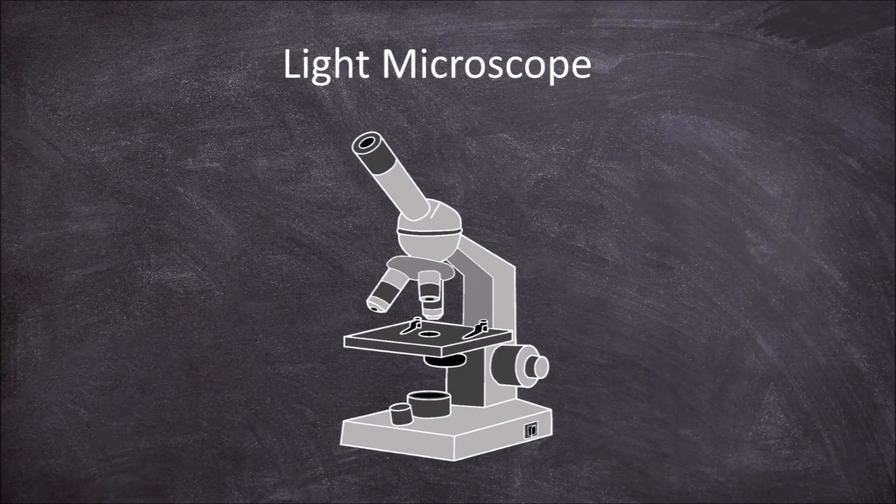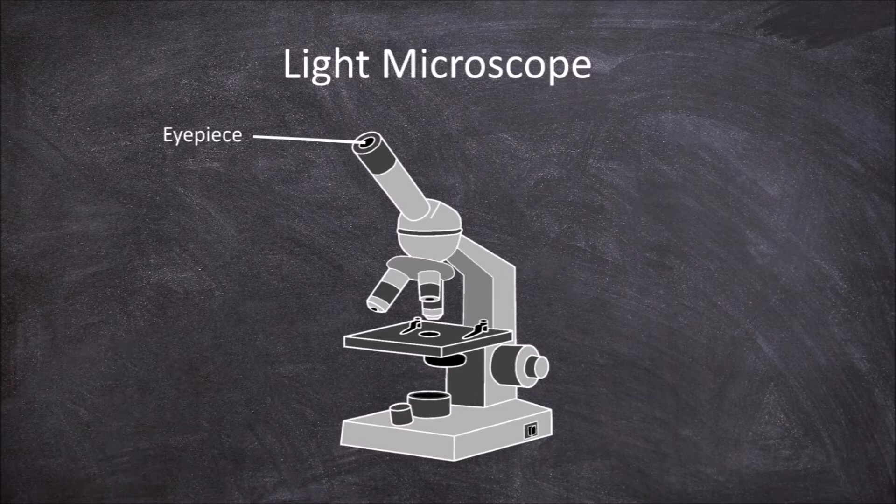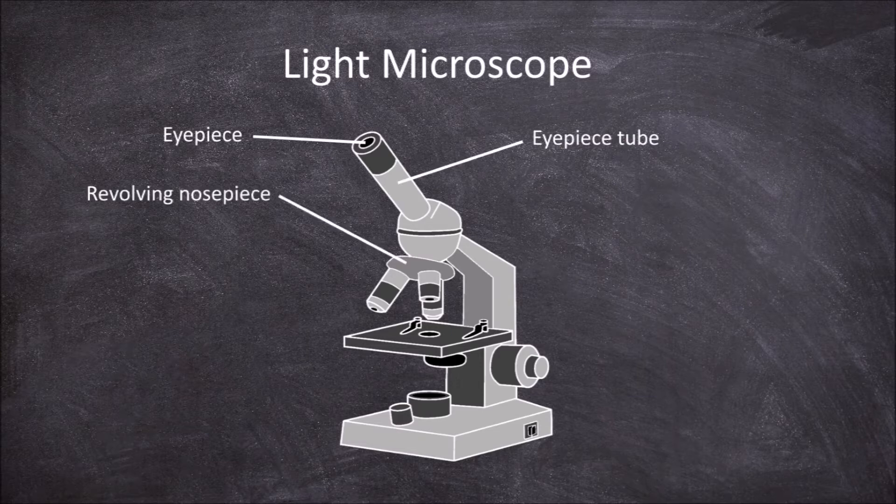The parts of the light microscope are the eyepiece, also known as the ocular lens, which is where you look into the microscope. The eyepiece tube. The revolving nosepiece, which the objectives are attached to.